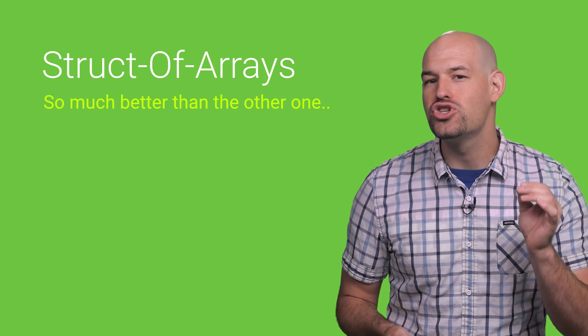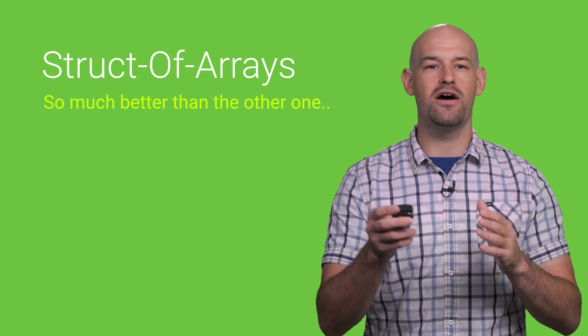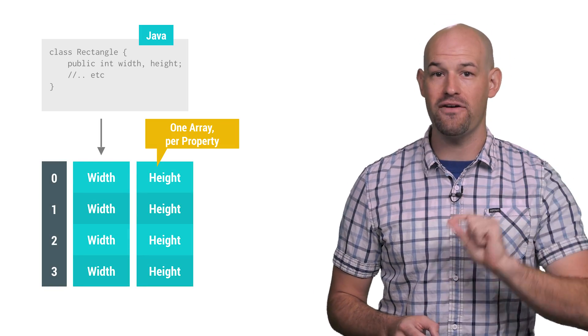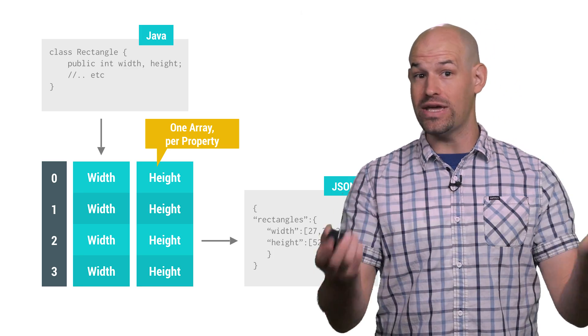So what's the solution? The struct of arrays form. Basically, think of struct of arrays as a transpose on your data. Given a list of objects, take all of one property from every element and list them together in their own array, and then do this for each property in the class.